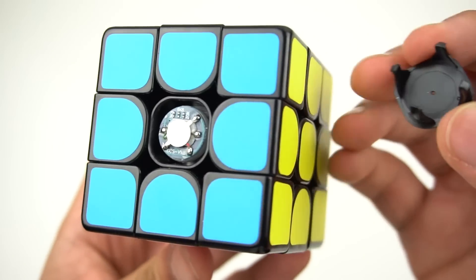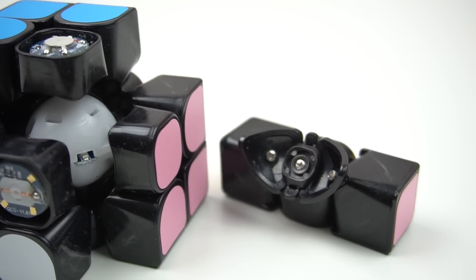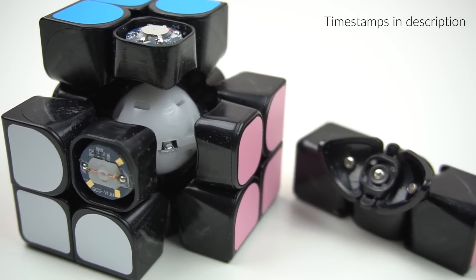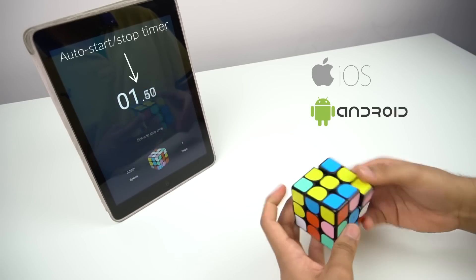The Geiger Cube is a magnetic speed cube with Bluetooth sensors built into the center pieces and the core that allow you to track your movements in real time using the SuperCube app, which is available on both iOS and Android.